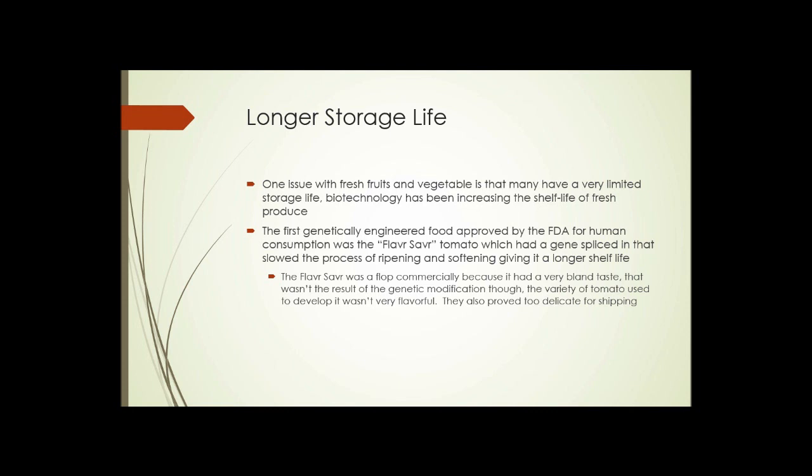Longer storage life: one issue with fresh fruits and vegetables is that many have a very limited storage life. Biotechnology has been increasing the shelf life of fresh produce. The first genetically engineered food approved by the FDA for human consumption was the so-called Flavor Saver tomato, which had a gene spliced in that slowed the process of ripening and softening, giving it a longer shelf life. However, the Flavor Saver was a flop commercially because it had a really bland taste — not as a result of the genetic modification, but because the variety of tomato used to develop it wasn't very flavorful to start with. They also proved a little too delicate for the rigors of shipping.